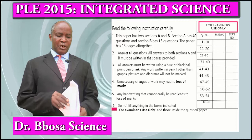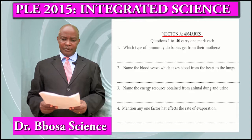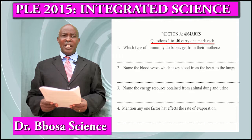Do not fill anything in the boxes indicated for examiners. Section A carries 40 marks. Questions 1 to 40 carry 1 mark each.